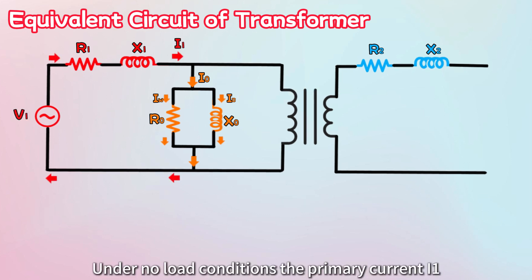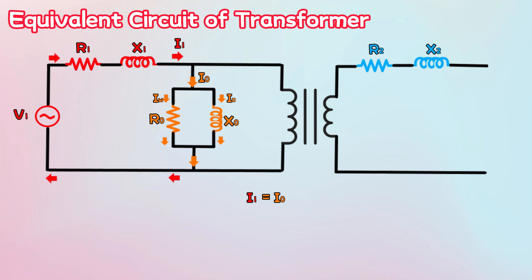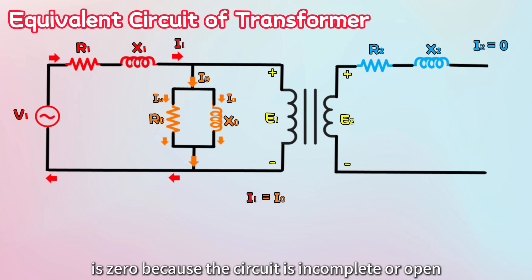Under no-load conditions, the primary current I1 is equal to the no-load current I0. Induced electromotive forces, denoted as E1 in the primary coil and E2 in the secondary coil, are generated. The secondary current I2 is zero because the circuit is incomplete or open.